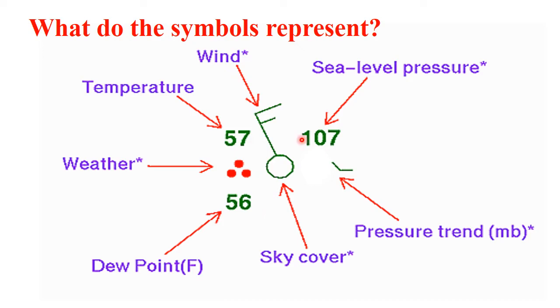The sea level pressure is found in the upper right-hand side of the model. Please note that the surface pressure in the weather station model shown is not 107 millibars. Instead, it is 1010.7 millibars, as a 9 or a 10 must be added to the pressure to make the reading make sense. Finally, the pressure tendency can be found directly below the sea level pressure.